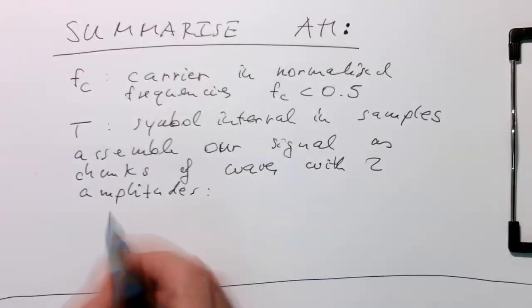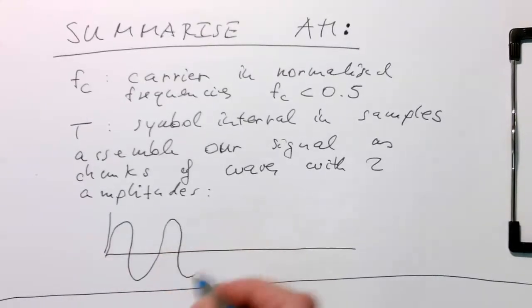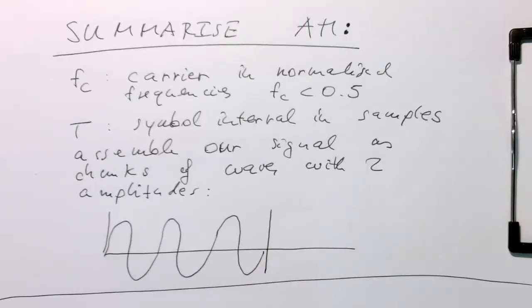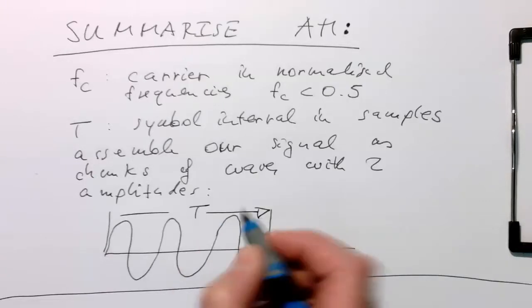So if we are looking at our plot here, then we have a high amplitude. And we do this for a certain period here. So that's our T. And remember, this is defined in samples.